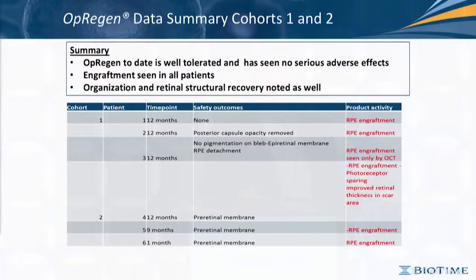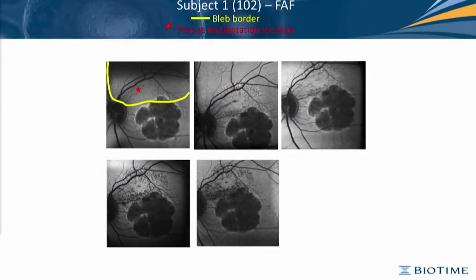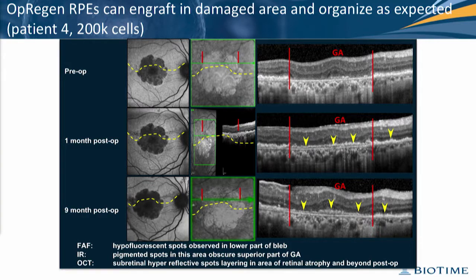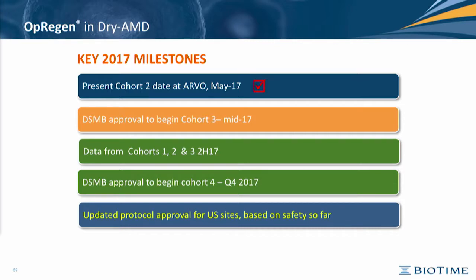This summary shows that all cells engrafted. With 50,000 cells you can notice in the lower images a decrease in hyperfluorescence. This is the bleb with 200,000 cells, and we can see the cell engraftment in an area that was previously missing. These are the milestones we are proposing for the end of the year, in which we complete cohort 3 and start cohort 4.